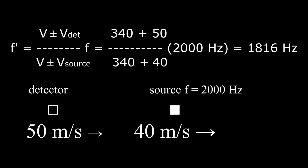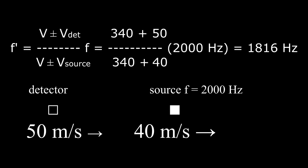In solving Doppler shift problems, we first fill in the three velocities and then choose the plus or minus sign in the numerator and denominator.